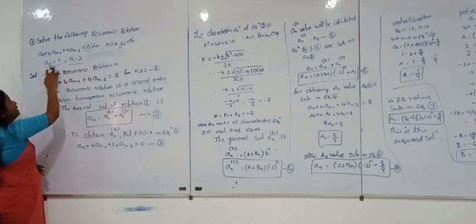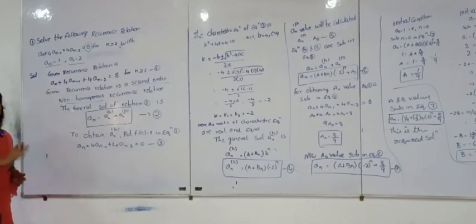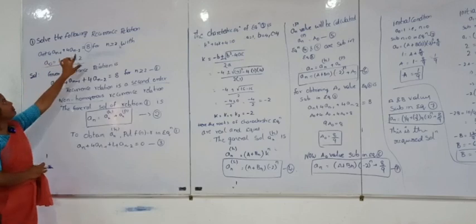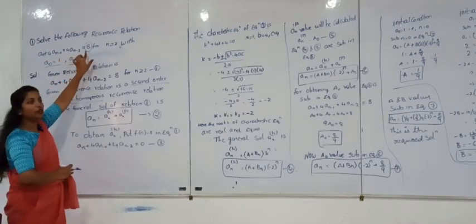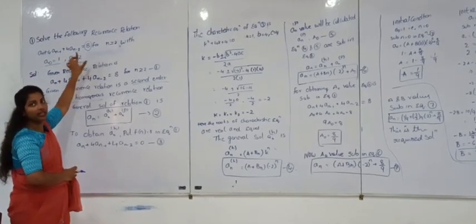So A0 equal to 1, A1 equal to 2. These are the two initial conditions. First point: we need to identify whether it is homogeneous or non-homogeneous. Second point: we need to check how many initial conditions are given.